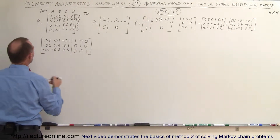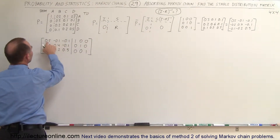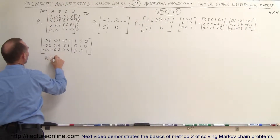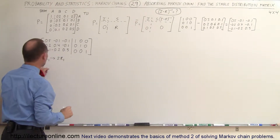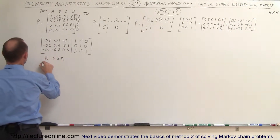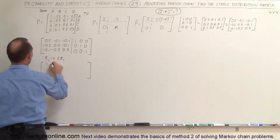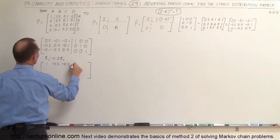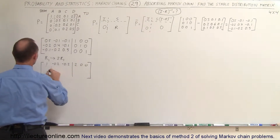The first thing we want to do is take the first row and multiply it times 2 to get the 0.5 to become a 1. So we're going to replace the first row by twice the first row. Multiply everything by 2 and the first row becomes: 1, minus 0.2, minus 0.2, 2, 0, 0.